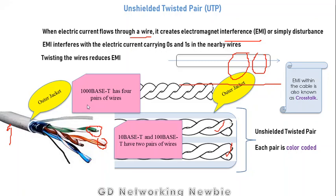There are two different Ethernet standards. One is called 1000BaseT, which uses four pairs of wires, while the 10BaseT and 100BaseT standards use two pairs of wires. So the minimum requirement is two pairs of wires.